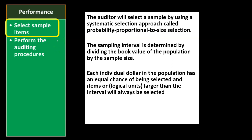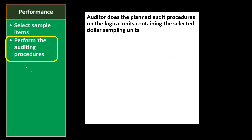Moving to the performance phase — selecting sample items — the auditor selects a sample using a systematic approach called probability proportional to size selection. The sampling interval is determined by dividing the book value of the population by the sample size. Each individual dollar has an equal chance of being selected, and logical units larger than the interval will always be selected. The auditor then performs the planned auditing procedures on the logical units containing the selected dollar sampling units.